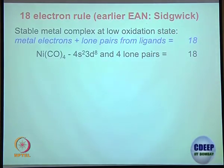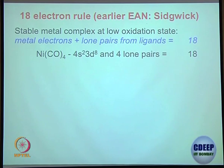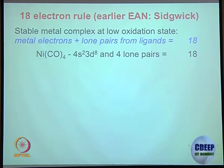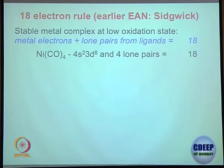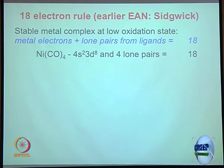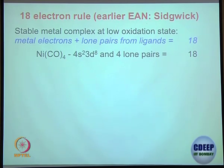We discussed Werner coordination theory — a simple theory, 1913 Nobel Prize. The next theory is the 18 electron rule, which is an empirical rule, not a god-given rule. Compounds formed first; then scientists figured out there is a rule that looks like the 18 electron rule. It simply tells you: when you form a metal-ligand coordination complex, if the total valence electron count equals 18 electrons, it is going to be a stable complex.